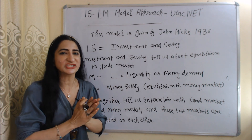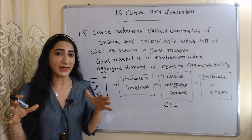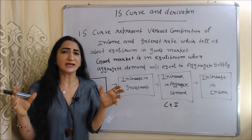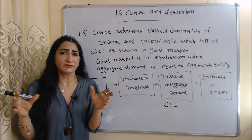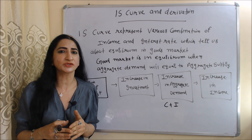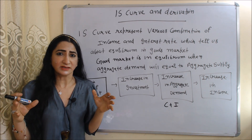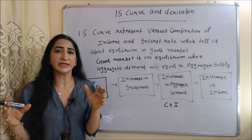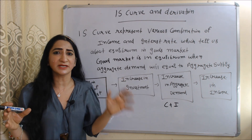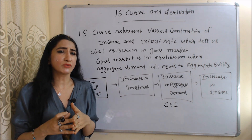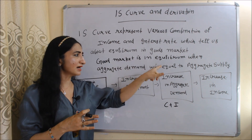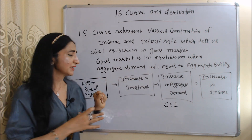Together, IS and LM tell us the interaction between the goods market and the money market, and also describe how these two markets depend on each other. First of all, we are going to talk about the IS curve and the derivation of the IS curve. The IS curve is a combination of income and interest rate which mainly tells us equilibrium in the goods market.